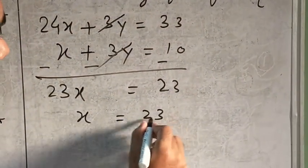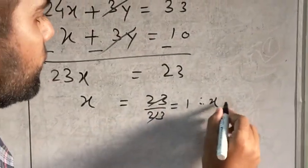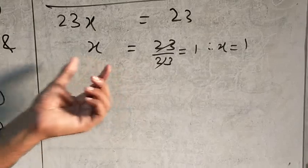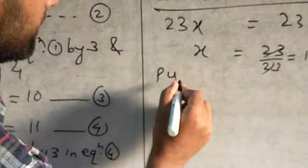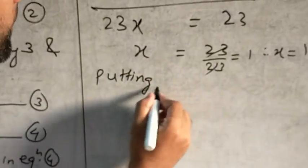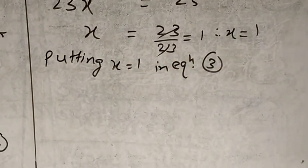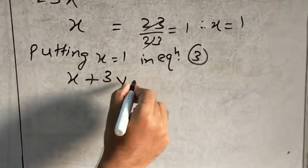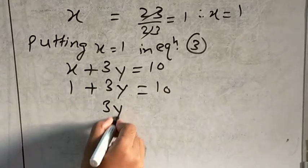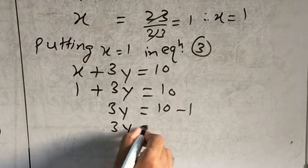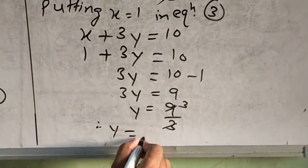Therefore x is equal to 23 upon 23, which equals 1. So x equals 1. Now substituting x equals 1 into equation 3: x plus 3y equals 10 becomes 1 plus 3y equals 10; 3y equals 10 minus 1 equals 9; y equals 9 upon 3, and 3 divides into 9, therefore y equals 3.